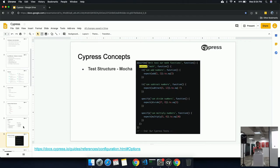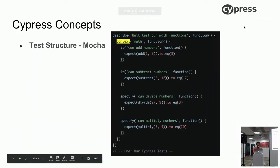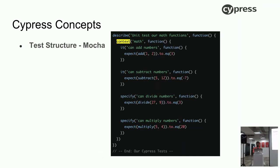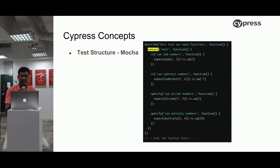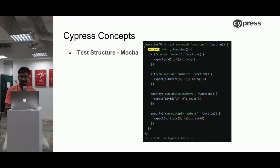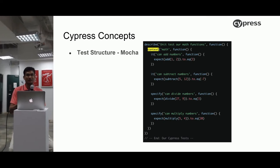From a concepts perspective, Cypress borrowed different concepts from different frameworks. The test structure concept was borrowed from Mocha. We have specifications which contain a group of tests. Inside a specification we have a describe block, and inside that we have context, and inside context we have multiple test cases — specified using 'it' or 'specify', depending on user preference. The format follows JavaScript specification — everything is written within parentheses. It's a bit of a learning curve when new to JavaScript, but once you have it, it's easy.